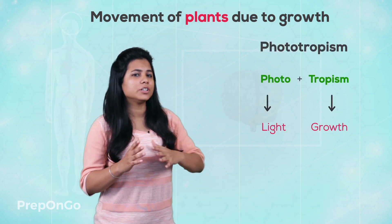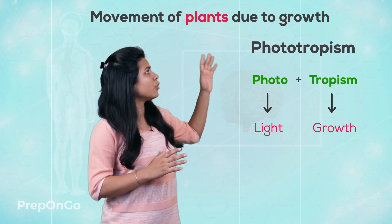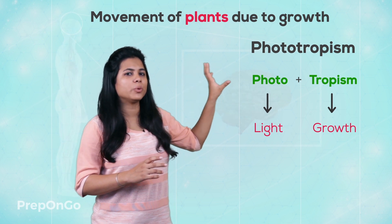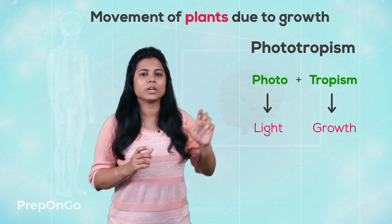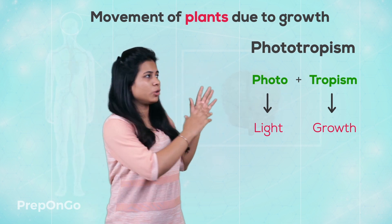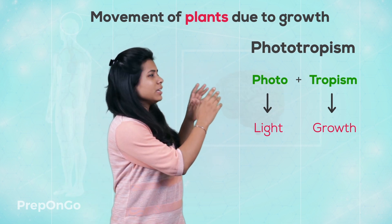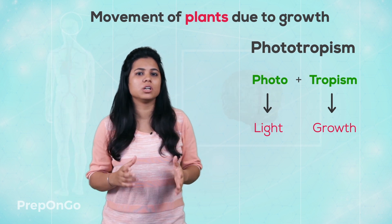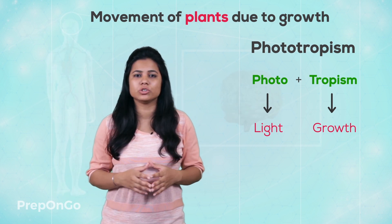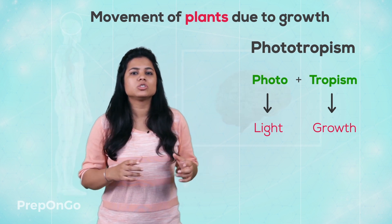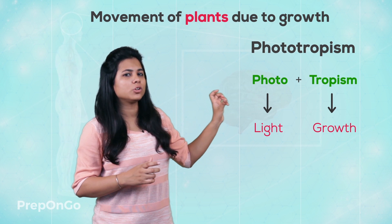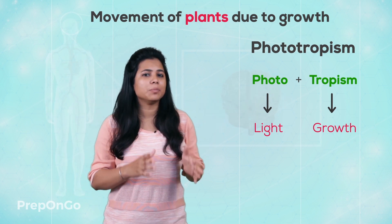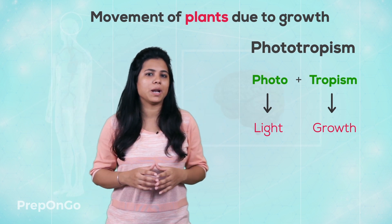The first one is phototropism. From the word itself, 'photo' means light, and tropism means growth movement due to growth stimulus. So phototropism affects the movement of the plant.